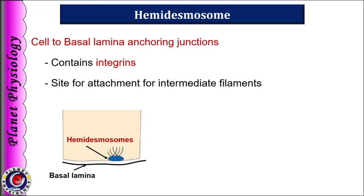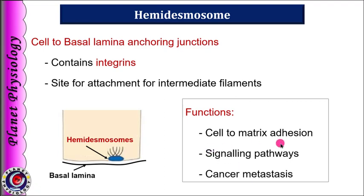Now coming to the cell-to-extracellular matrix adhesions. First is hemidesmosome. They are present on the basal surface of epithelial cells and attach cells to the basal lamina. They appear similar to half of a desmosome and hence are called hemidesmosomes, but they are formed by integrins and not cadherins. Cytoplasmic domains of hemidesmosomes attach to intermediate filaments. Apart from cell-to-matrix junction formation, hemidesmosomes are also involved in signaling pathways such as keratinocyte migration or cancer metastasis.